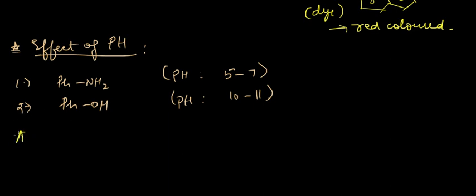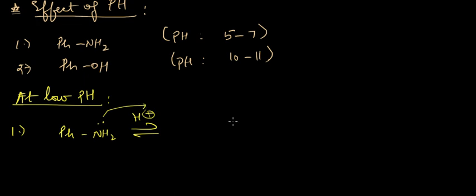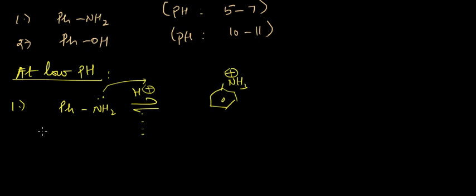At low pH, in the case of aniline — low pH means high acid concentration — aniline will actually attack on the H+ to form itself with a positive charge, forming NH3+. What actually happens at high pH with the diazonium salt is something different.